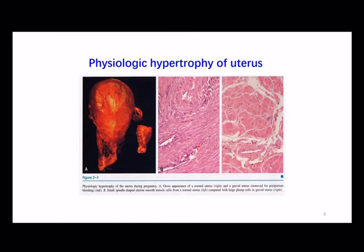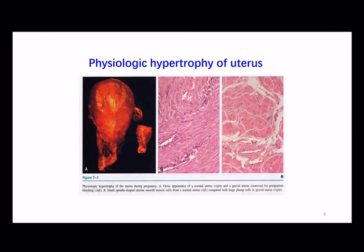Picture B shows us the smooth muscle cells of normal uterus — they are small and spindle shaped. Picture C shows us the large smooth muscle cells in the gravid uterus. The size of individual smooth muscle cells increased. That's the hypertrophy caused by hormonal stimuli.